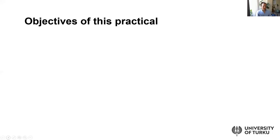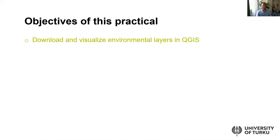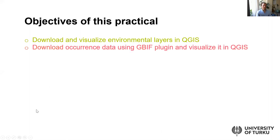The main objectives today are to download and visualize environmental layers in QGIS, and then also download occurrence data — species locations — using the Global Biodiversity Information Facility, an application that you can download from within QGIS. Then we're going to visualize these species occurrences in QGIS software.